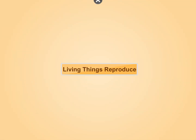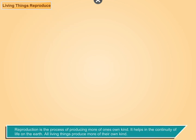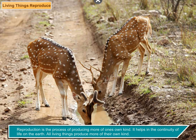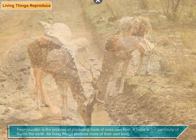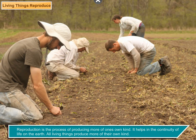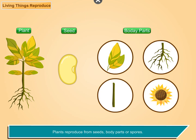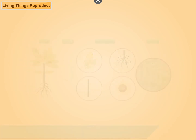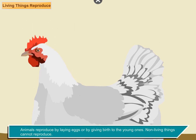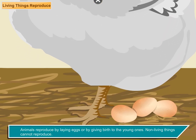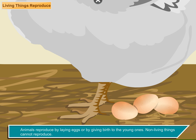Living things reproduce. Reproduction is the process of producing more of one's own kind — it helps in the continuity of life on earth. Plants reproduce from seeds, body parts or spores. Animals reproduce by laying eggs or by giving birth to young ones. Non-living things cannot reproduce.